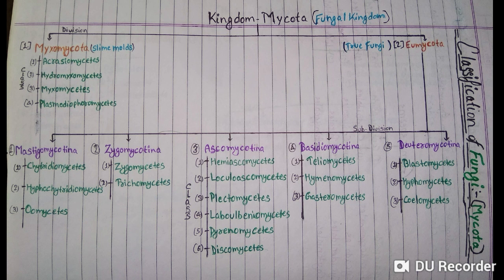The division Myxomycota is further divided into four classes: first, Acrasiomycetes; second, Hydromyxomycetes; third, Myxomycetes; and fourth, Plasmodiophoromycetes.